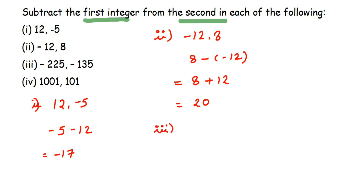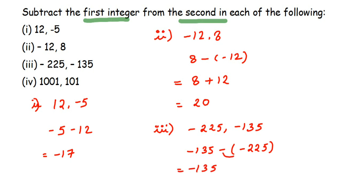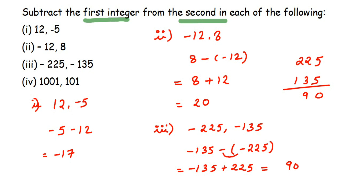Next we have -225 and -135. Subtracting gives -135 minus (-225), and minus times minus becomes plus, so it's -135 plus 225. These have different signs, so we subtract: 225 minus 135 gives 90. The sign is that of the greater number — 225 is greater and it's positive — so the answer is +90.